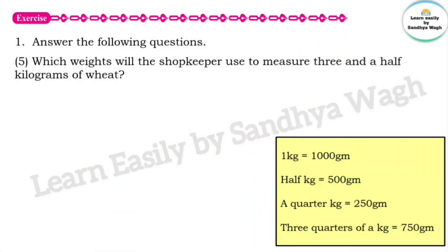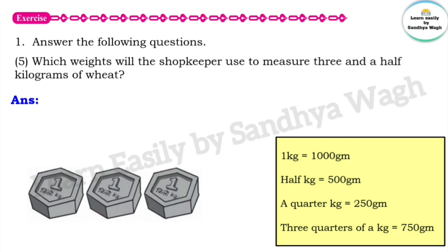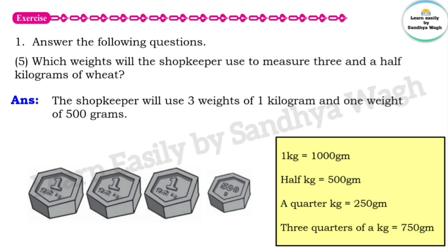Next question: Which weights will the shopkeeper use to measure 3 and a half kilograms of wheat? Wheat means gehu. 3 kg means three 1 kg weights. The question asks for 3 and a half kilogram, so we need 1, 2, 3 — that's 3 kg — and half kilogram means 500 grams. The shopkeeper will use 3 weights of 1 kg and 1 weight of 500 grams.